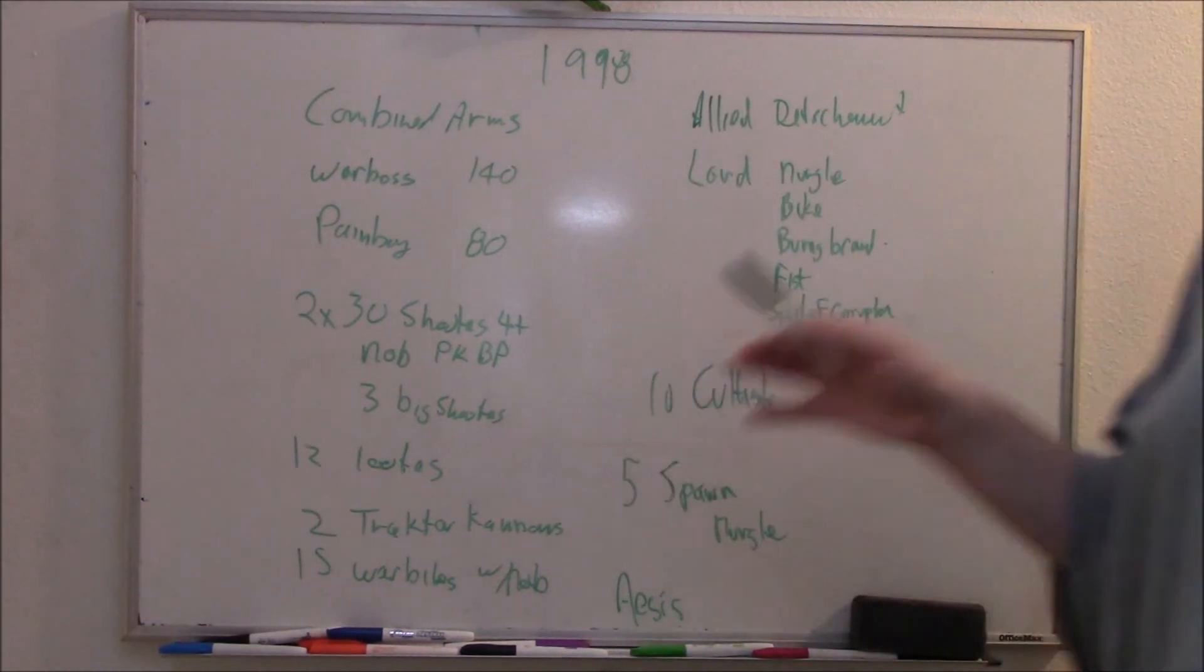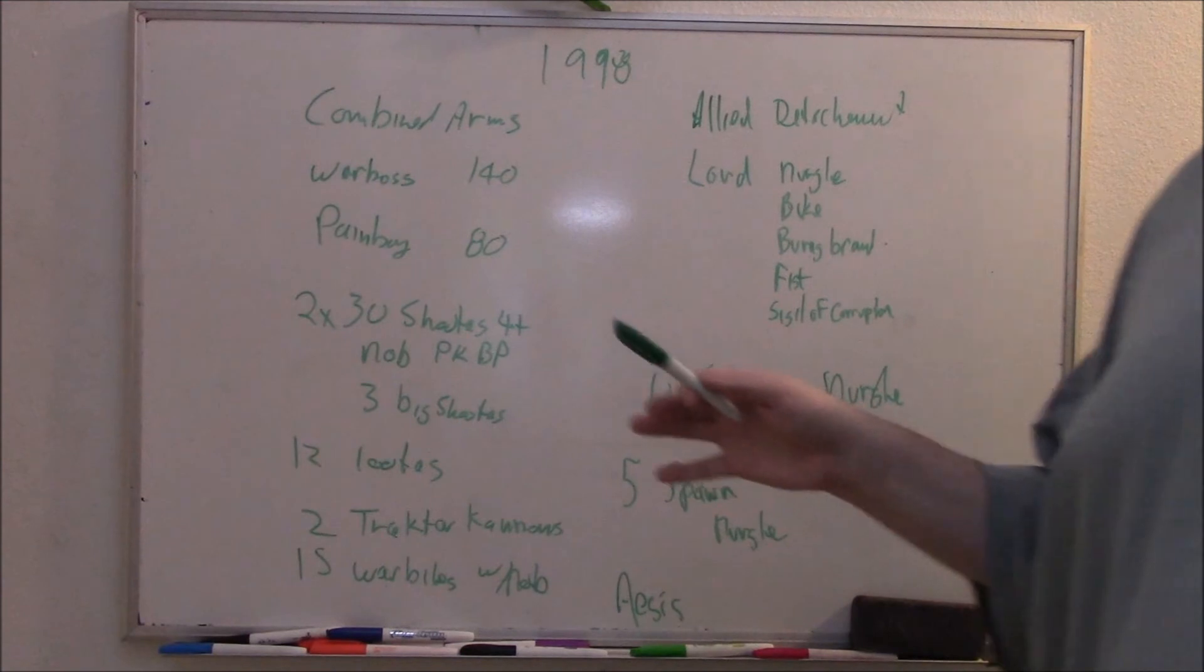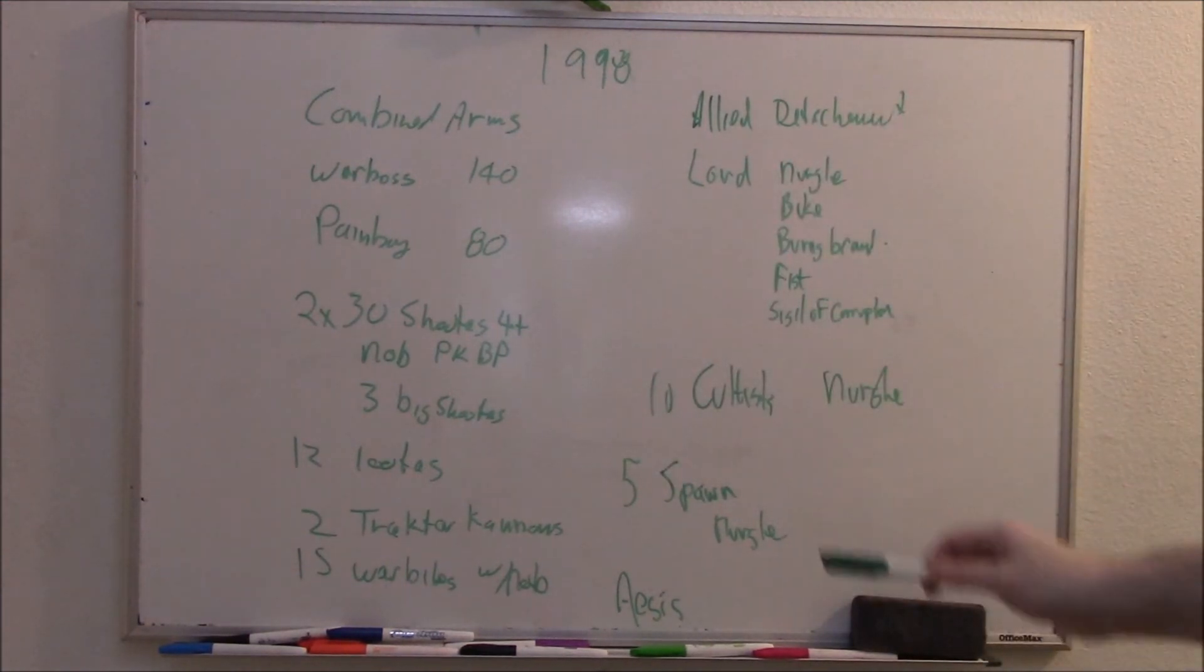And all the time you're going to be dealing with the Lootas. This isn't a very subtle list, there's no tricks to it, it's just very aggressive. Basic hammer and anvil tactics. Run up with your fast units, do as much as you can, have them absorb as much shooting as you can, and then back it up with just 60 Orcs with heavy armor.